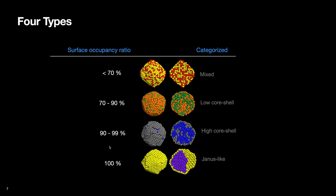On the other hand, if one of the materials occupies more than 90% of the surface, it is labeled as a high level of core-shell structure. So based on these criteria, each combination was categorized as either mixed, low level of core-shell, high level of core-shell, or Janus-like.